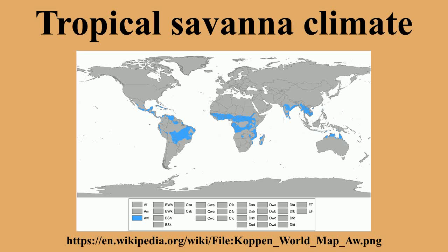Tropical savanna climates are most commonly found in Africa, Asia, and northern South America. The climate is also prevalent in sections of Central America, northern Australia, and southern North America, specifically in sections of Mexico and the state of Florida in the United States. Most places that have this climate are found at the outer margins of the tropical zone, but occasionally an inland tropical location also qualifies.